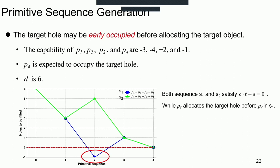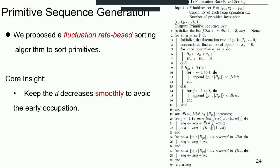Hence, to avoid this situation, we propose an algorithm. We propose a fluctuation-based sorting algorithm, and our core insight is to keep the value decreases smoothly to avoid early occupation.